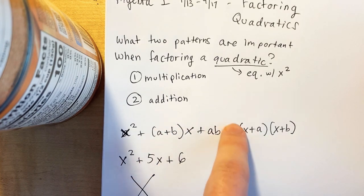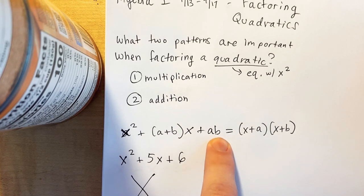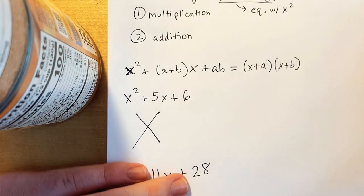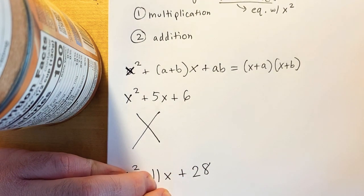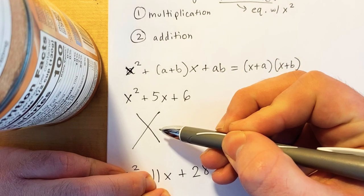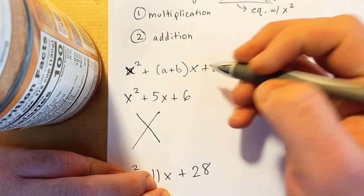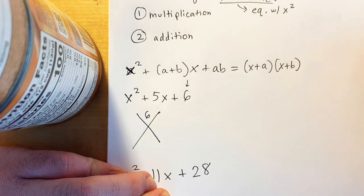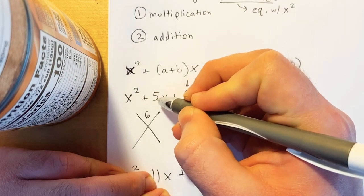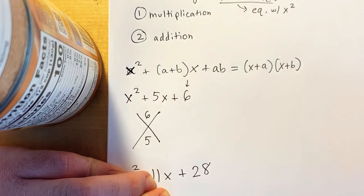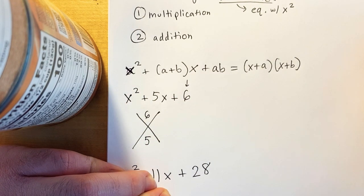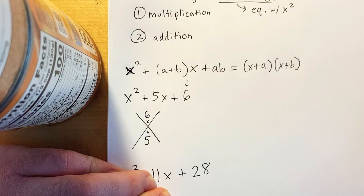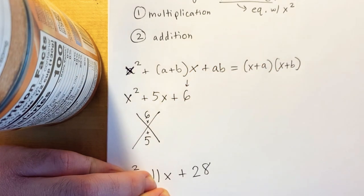We have addition here, and then we have multiplication here — that a times b. The first thing we're going to look at is x squared plus 5x plus 6. The way we factor this is using what I call the X method. We're going to put this number — 6 — at the top, and then the number in front of the x — 5 — at the bottom. Multiplication at the top, addition at the bottom.